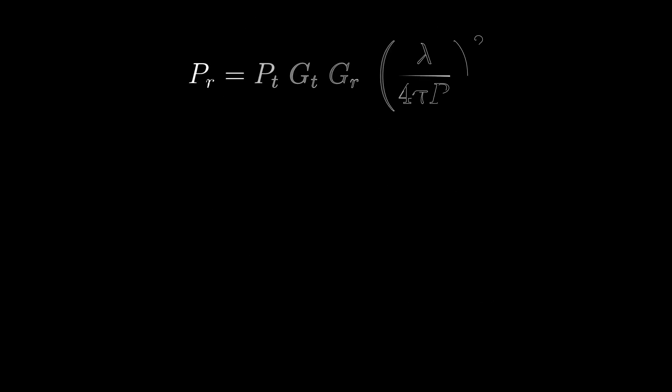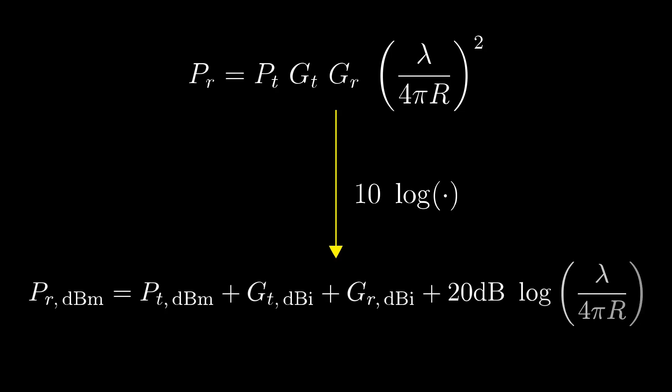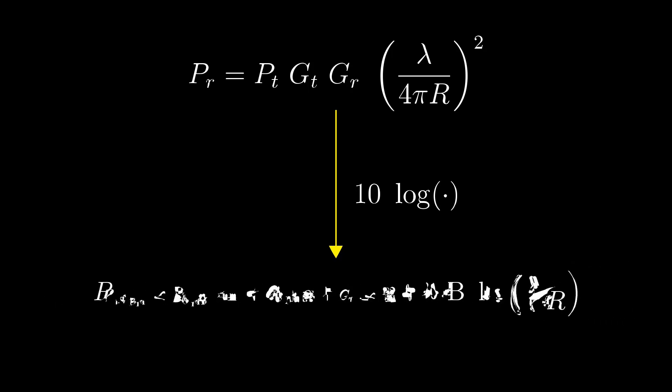If we apply this same idea to the Friis equation and take 10 times the logarithm of both sides, the difficult multiplication gets replaced by simple addition. Since all we care about is how much the power level changes if we increase the distance between transmitter and receiver, we can also write this as some constant value minus 20 dB times the log of R.